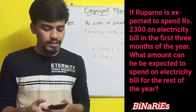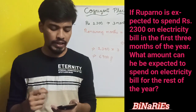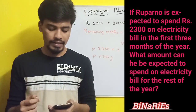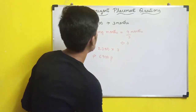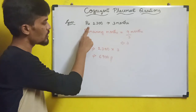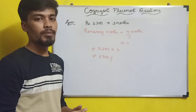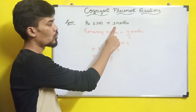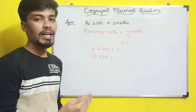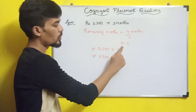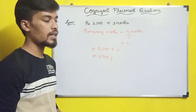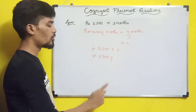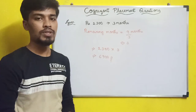Next question: Ruparno is expected to spend Rs. 2300 on electricity bills in the first three months of the year. What amount can he be expected to spend for the rest of the year? Remaining months = 9, which contains three sets of 3 months. So expected spend = 2300 × 3 = Rs. 6900.